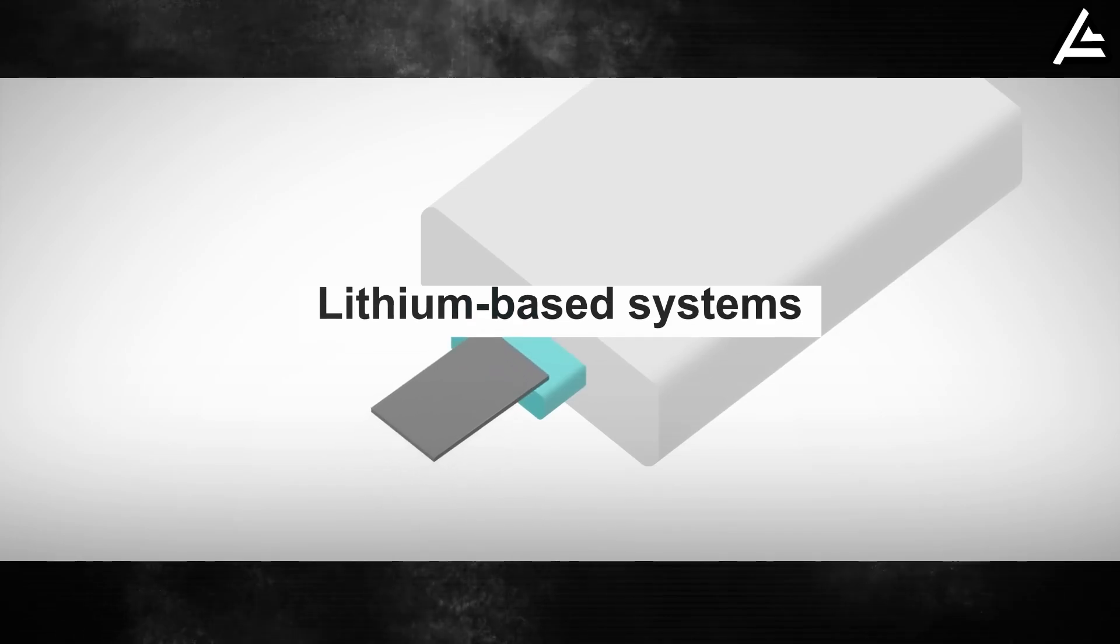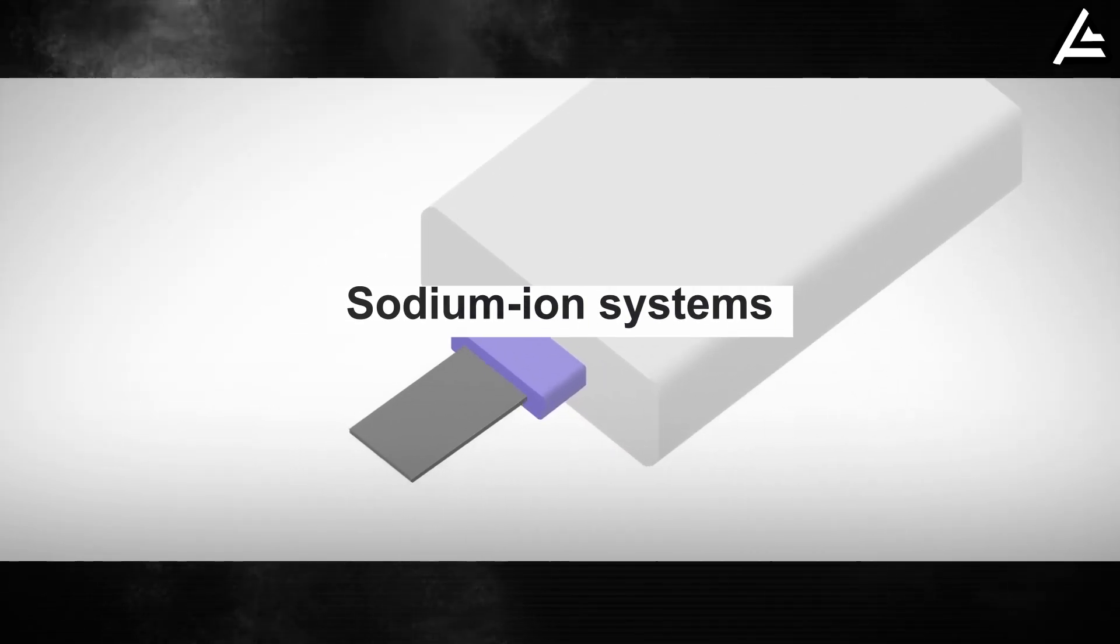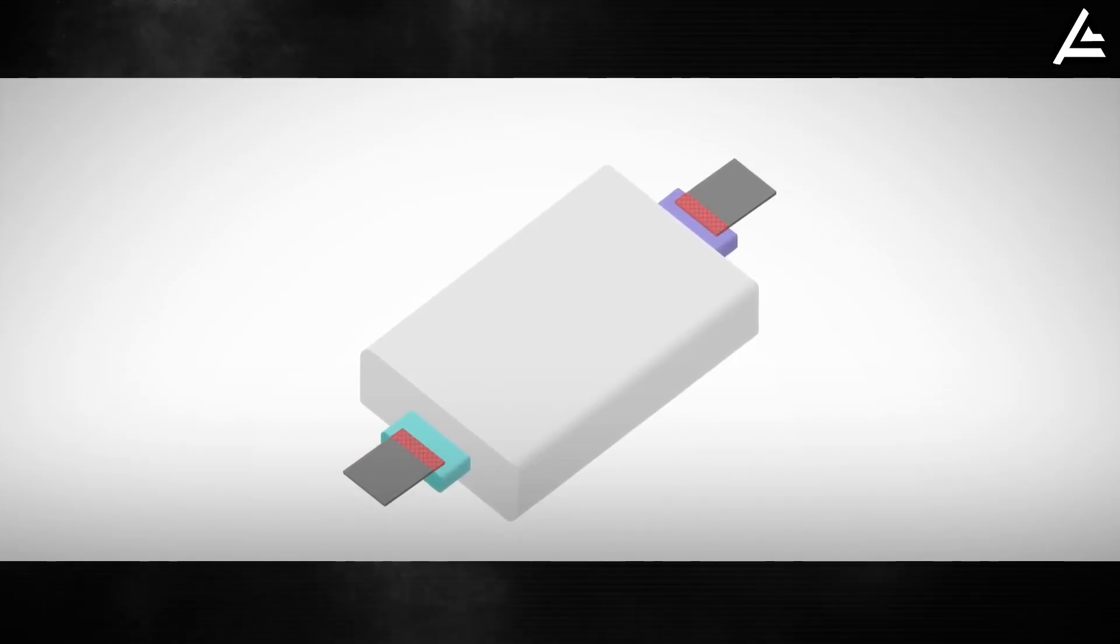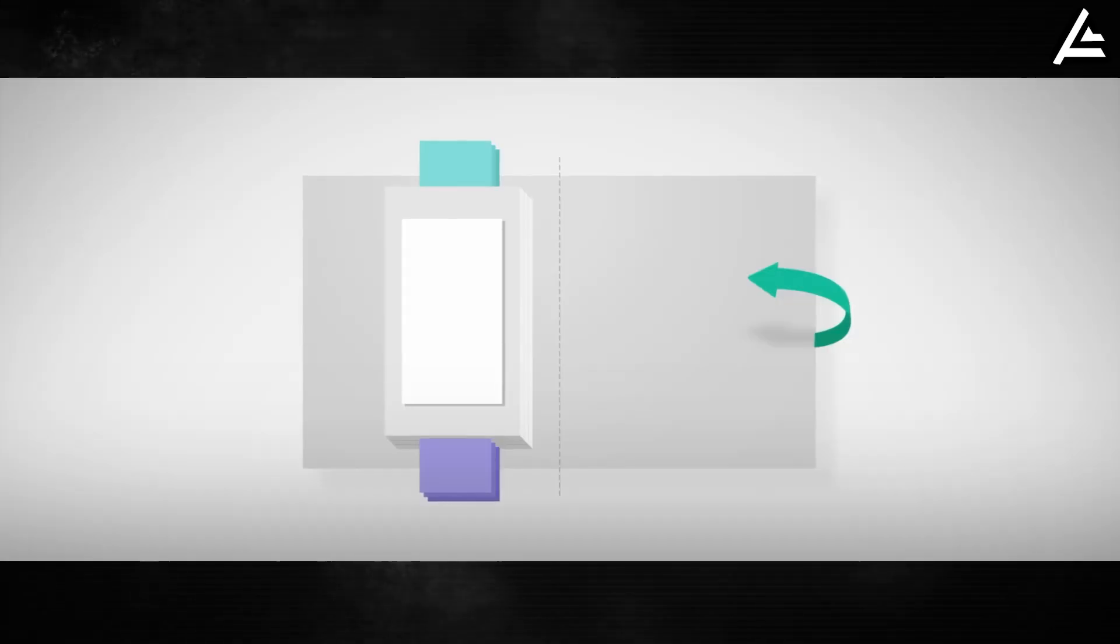That means solid-state batteries can be built using different ions: lithium-based systems, sodium-ion systems, aluminum-ion systems. They are not the same thing, and they are not at the same stage of development.